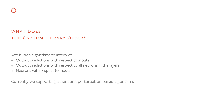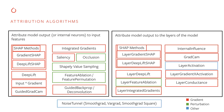We plan to expand the library and add more algorithms beyond attribution-based approaches. The following diagram summarizes all attribution algorithms currently in Captum divided into two groups. The first group features algorithms that attribute output predictions or internal neurons to the inputs of the model. The second group features algorithms that attribute outputs of the network to the internal layers.